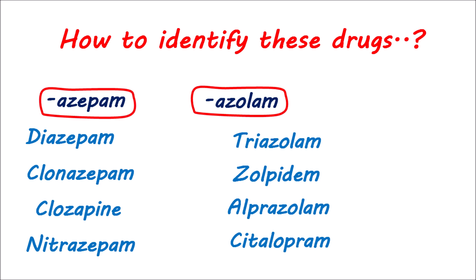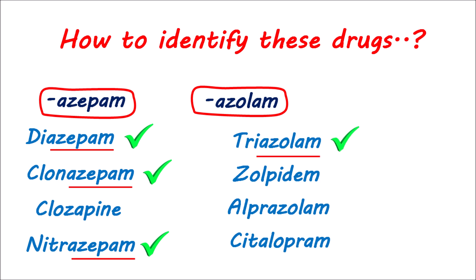Now let's see how many of these listed drugs are really benzodiazepines. Diazepam has the suffix -azepam, so it is a benzodiazepine. Similarly, clonazepam and nitrazepam are also benzodiazepines. Triazolam has the suffix -azolam, so it is also a benzodiazepine. Similarly, alprazolam is also a benzodiazepine. Clozapine is not a benzodiazepine because it lacks the suffixes -azepam or -azolam — this drug is an antipsychotic. Similarly, zolpidem is not a benzodiazepine but acts in the same way, so it is considered a non-benzodiazepine hypnotic. Finally, citalopram is an antidepressant.